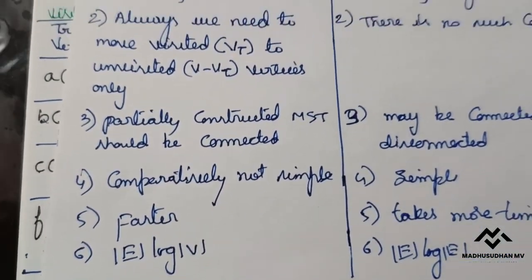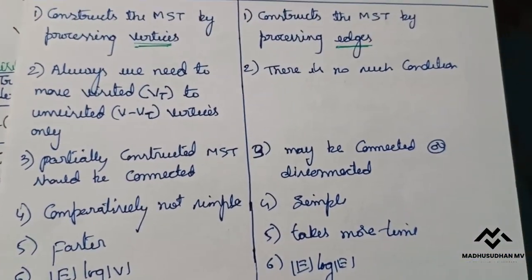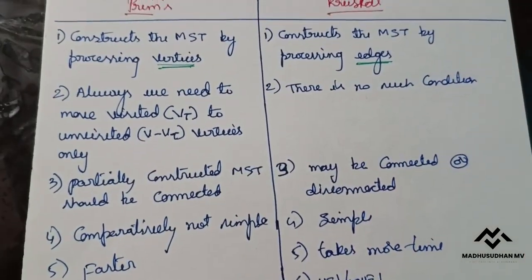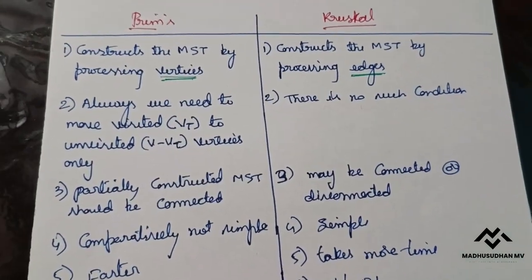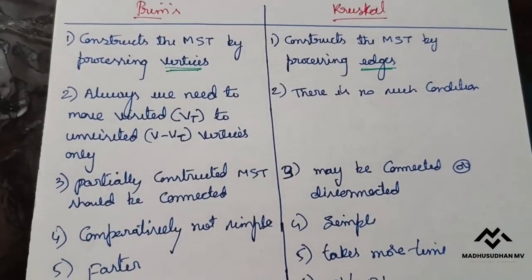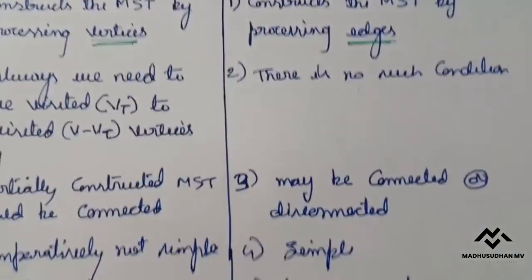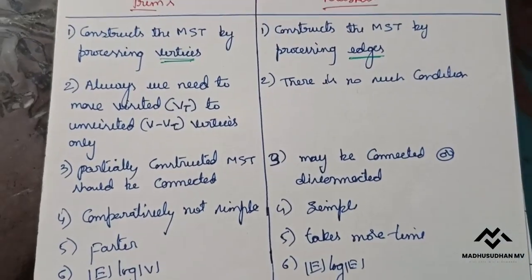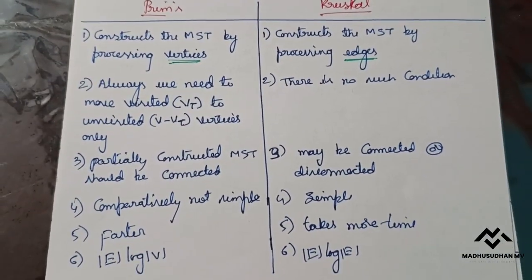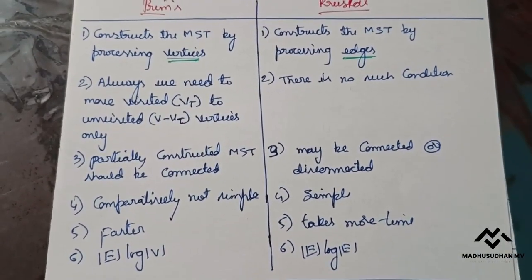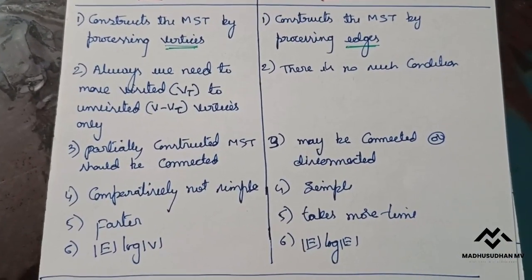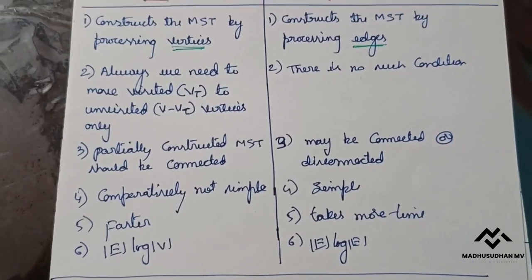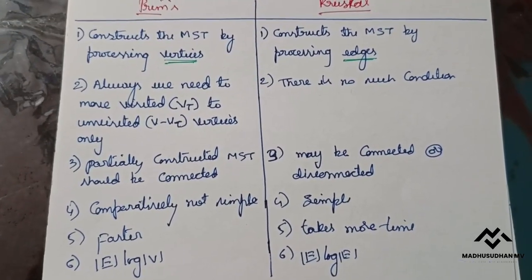So these are the differences between Prim's algorithm and Kruskal's algorithm. I hope you understood. If you have any questions, please write in the comments. Thank you for watching.